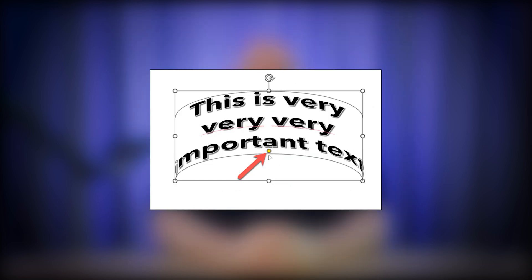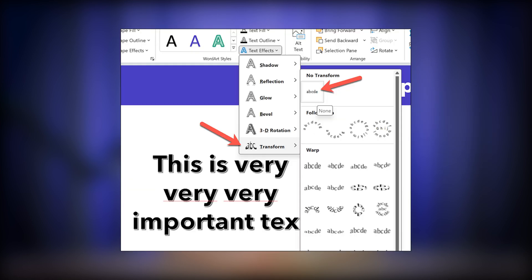To adjust the curve, click on the WordArt object and drag the orange handle to change the curvature. If you don't like it, you can always remove the effect by going back to Text Effects, Transform, No Transform.